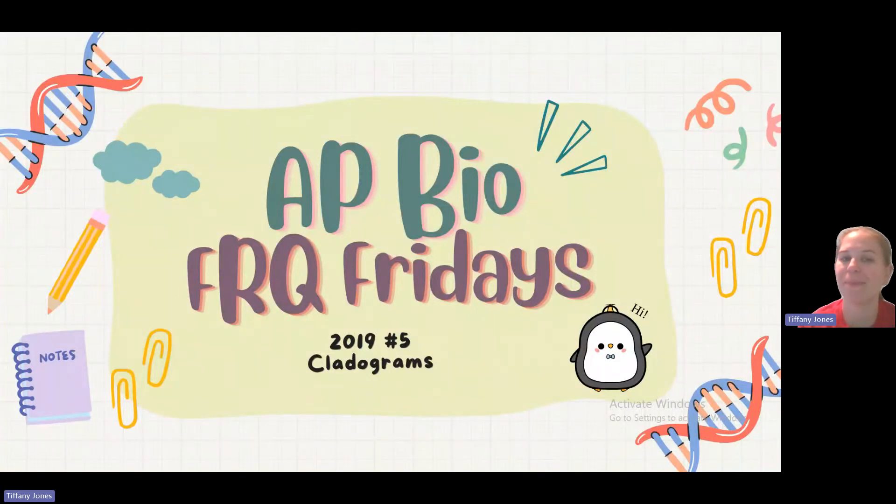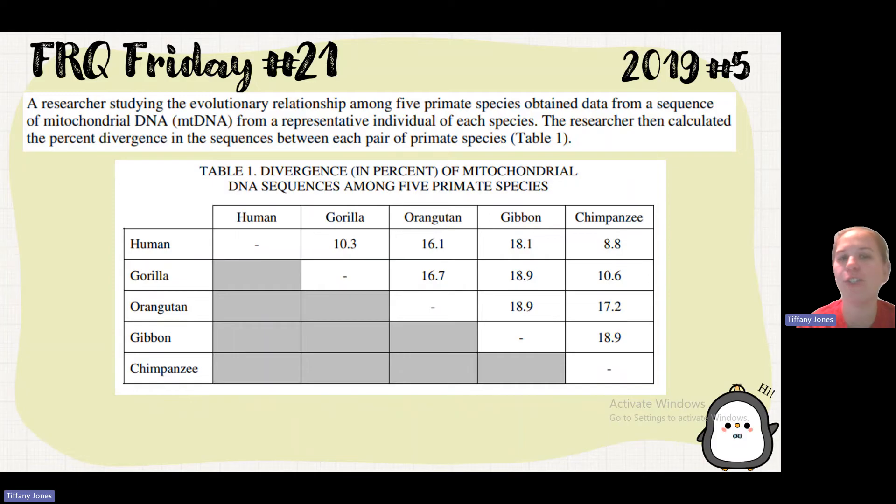Today we're going to do 2019 number five. A researcher is studying the evolutionary relationship among five primate species, obtained data from a sequence of mitochondrial DNA from a representative individual of each species. The researchers calculated the percent divergence in the sequences between each pair of primate species, and that's given to us in table one.